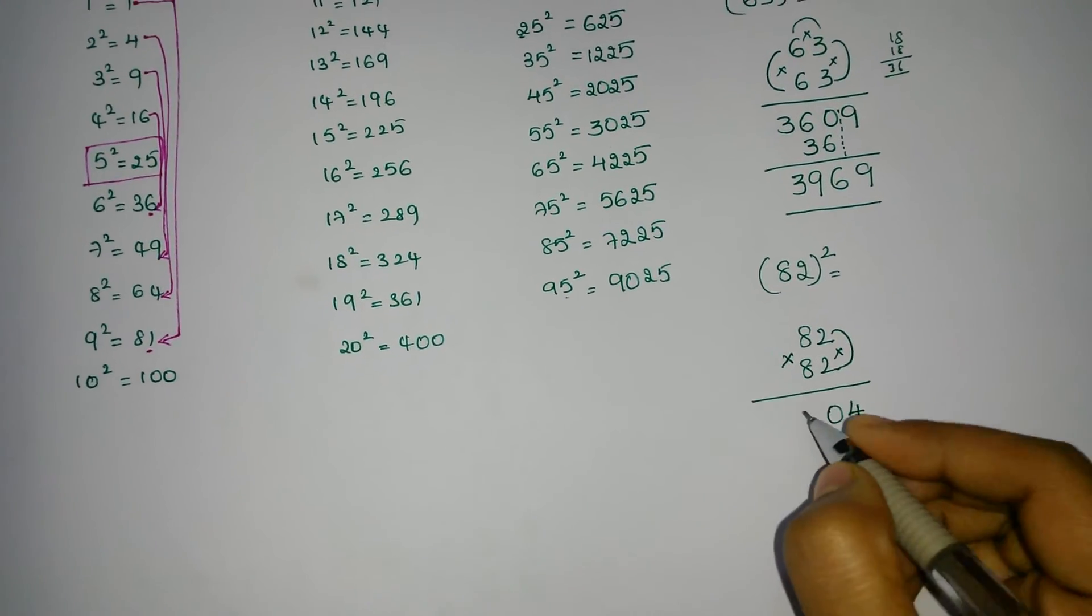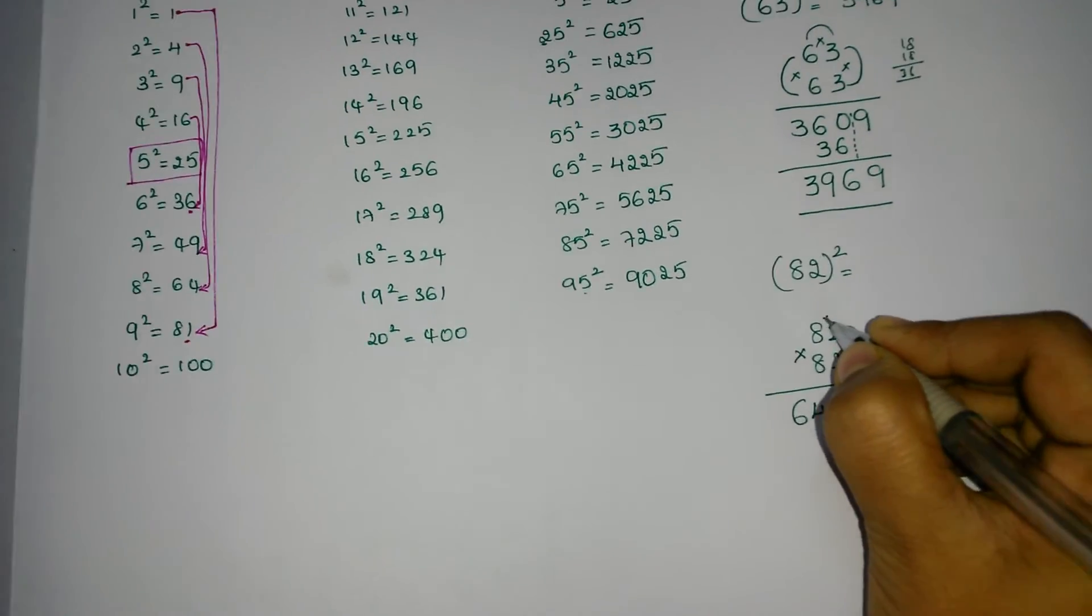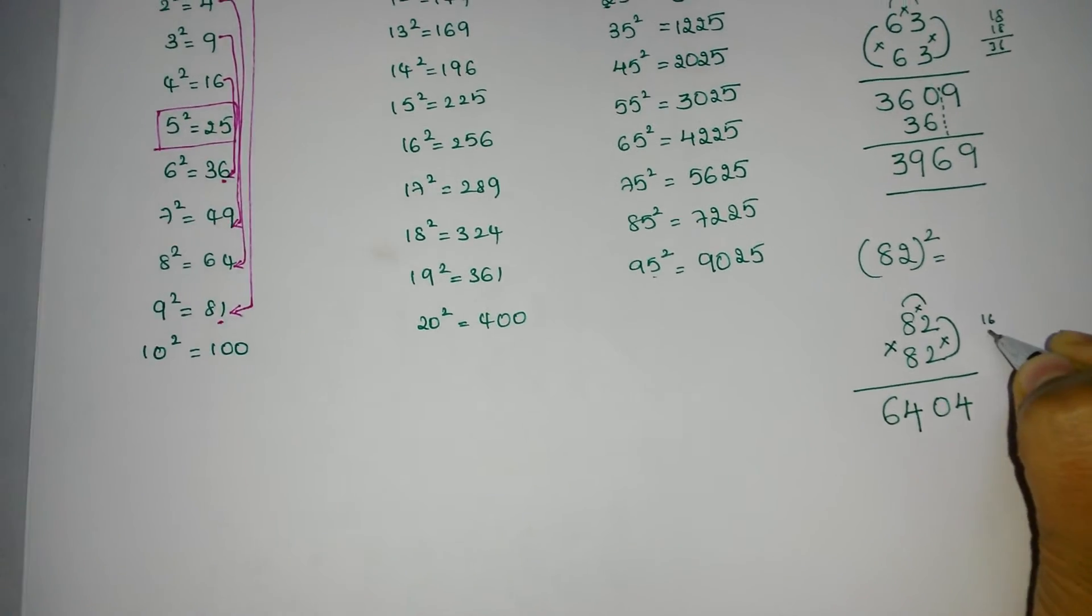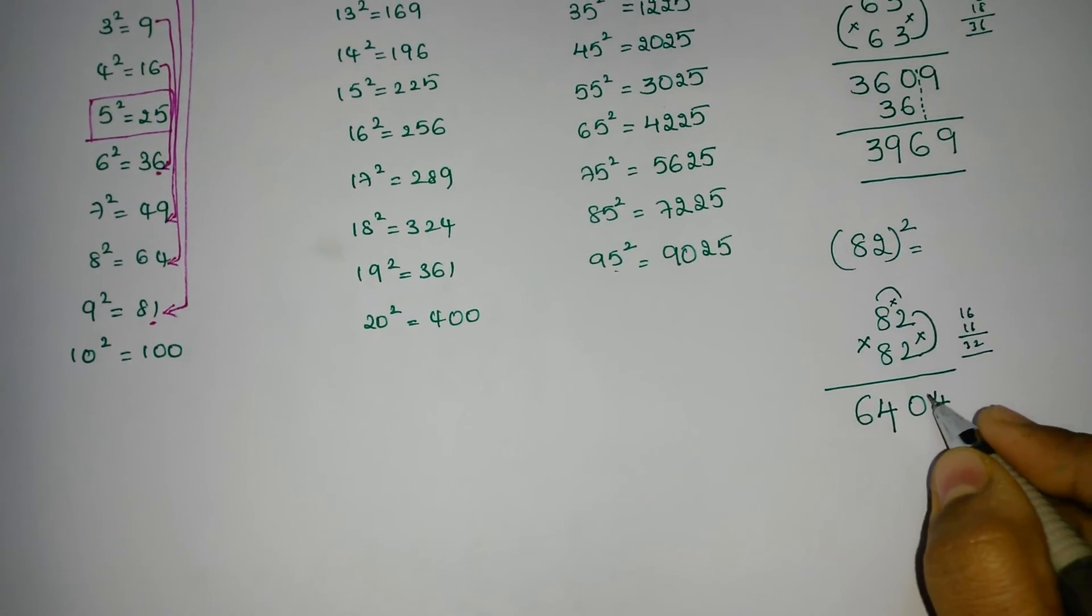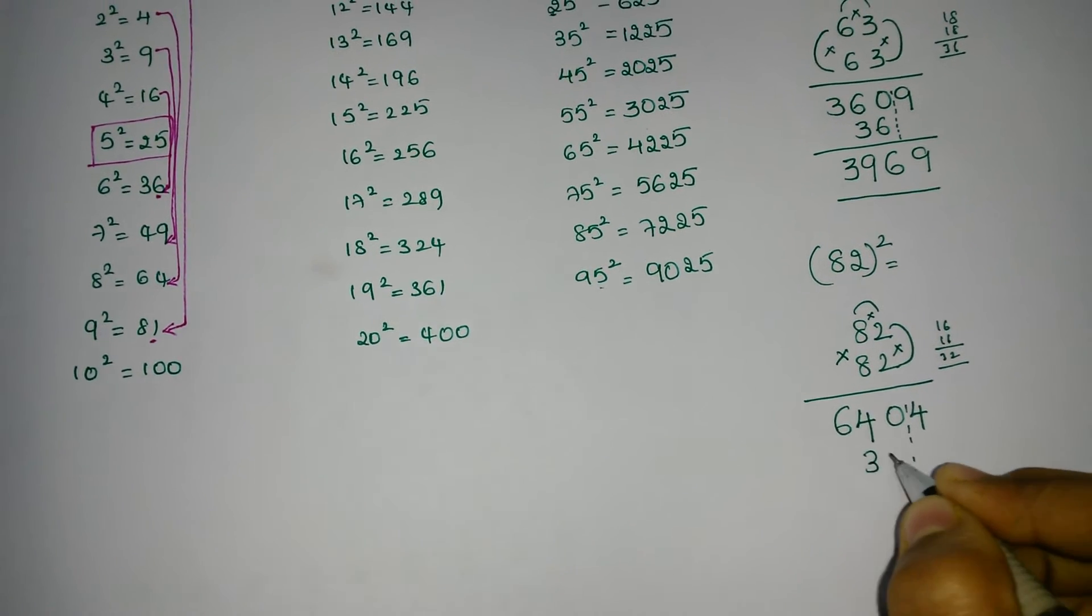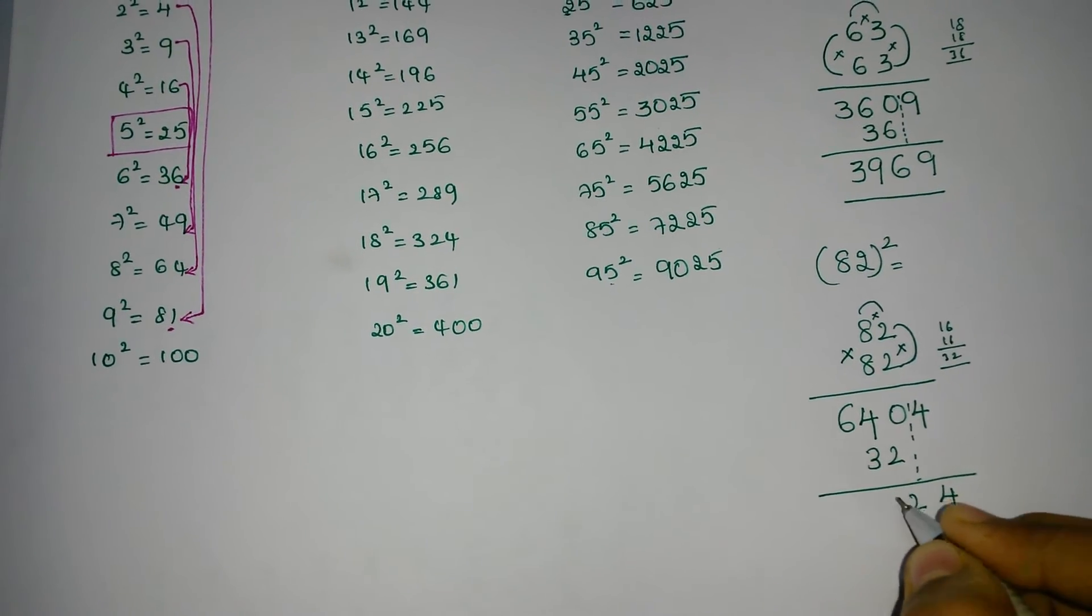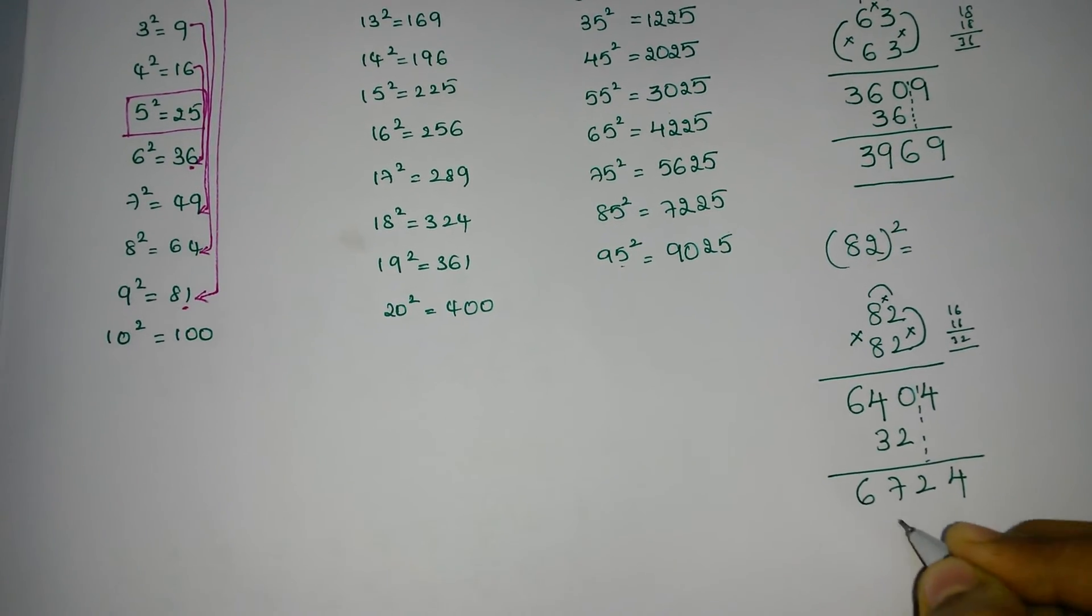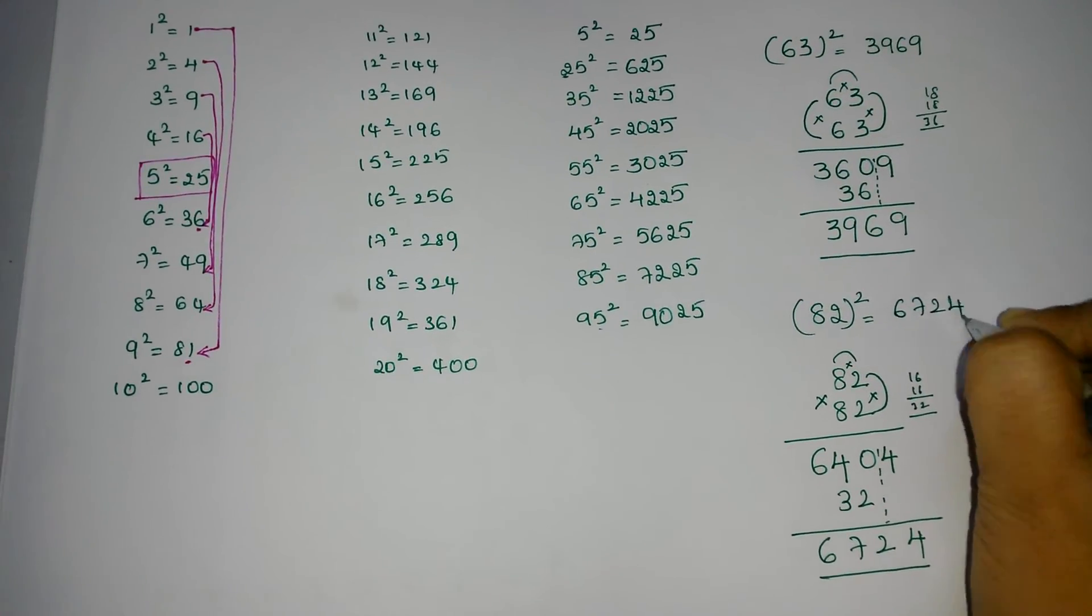Then next, 8 into 8 is 64. Then multiply these two: 8 times 2 is 16 and 8 times 2 is 16. 16 plus 16 is 32. So leaving one digit right here, 32. Now add 4, 2, 7, 6. So the answer of 82 square is 6724.